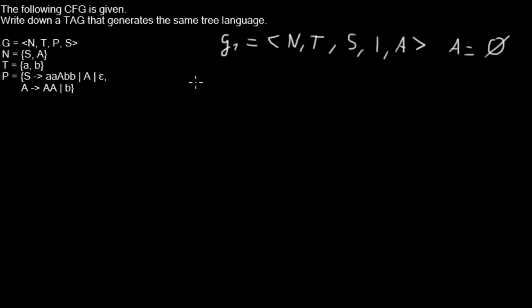Now the initial trees, that's where it gets interesting because for that we are taking the rules. For instance, let's take this rule and we convert it directly to the corresponding derivation tree. Let's call this alpha 1 and this will have S as a root node. And all terminals and non-terminals on the right-hand side will become their own daughter nodes. So in this case, two A's, one non-terminal A and two B's.